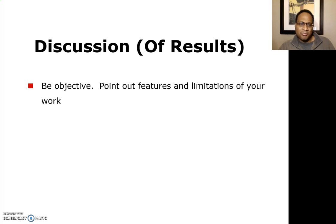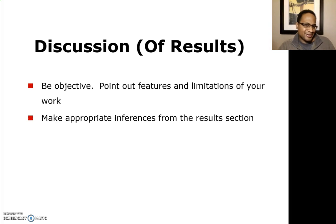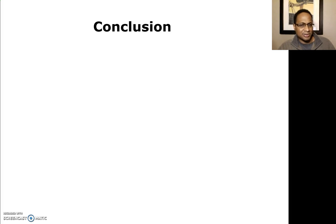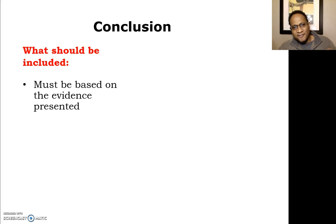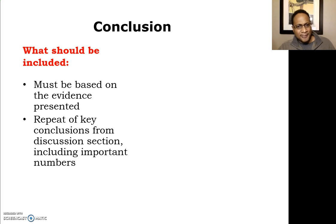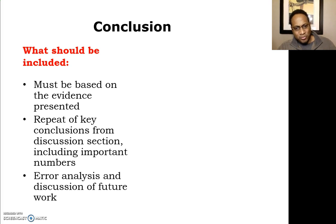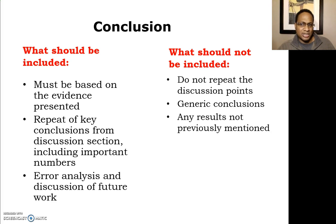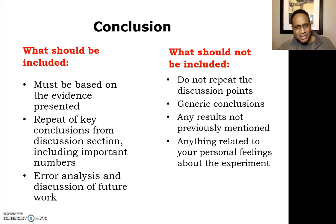Now let's look at the discussion. Be objective, point out features and limitations of your work, make appropriate inferences from the results, and relate the discussion to the purpose of the project — did you achieve what you set out to accomplish? For the conclusion, make sure it's based on the evidence presented. Sum everything up, repeat the key conclusions from the discussion section, and look at future work and potential error analysis. Do not repeat your discussion, make generic conclusions, introduce new results not previously mentioned, or include personal feelings.